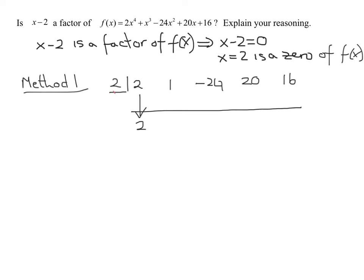And then you multiply 2 times this number. 2 times 2 is 4 and write the answer up there. And then what you do is add those two numbers. 4 and 1 is 5. Now let's do the next one. 2 times 5 is 10.